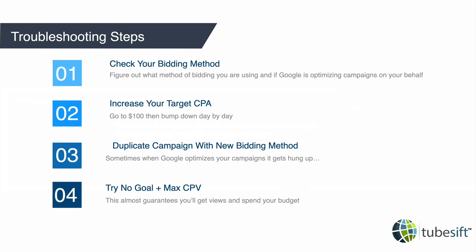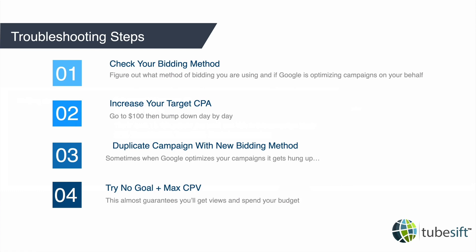Number three: I like to duplicate the campaign. Let's say you're going with target CPA and it just will not spend. I like to duplicate that campaign and then change that bidding method to maximize conversions and see if that works. And if all else fails after bumping up your target CPA and maximize conversions isn't working, then it's time to go set up a campaign with no goal and go max cost per view. This will almost guarantee that your ad is going to show, because you're just telling Google: don't worry about conversions, only worry about the most that I want to pay per view. In the past there weren't calls to action on those videos, but recently they've added calls to action, so the max cost per view is honestly a great place to start.